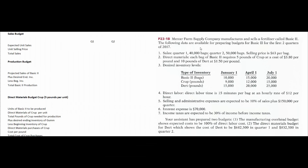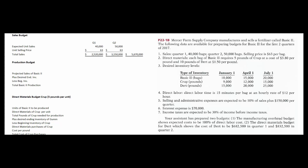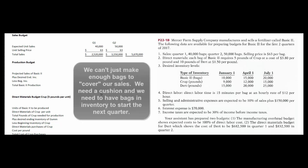The first budget we start out with is the sales budget. It tells us that the marketing department says we're going to sell 40,000 bags in quarter one and 50,000 bags in quarter two at a sale price of $63 a bag. In Excel, I'll put in 40,000 bags and 50,000 bags times $63 — this cell times this cell gives the first quarter sales, this cell times this cell gives the second quarter sales, and this gives the total sales for the first half of the year.